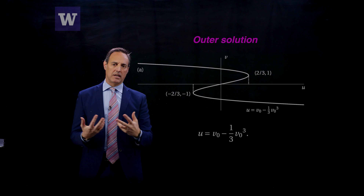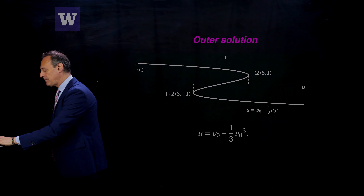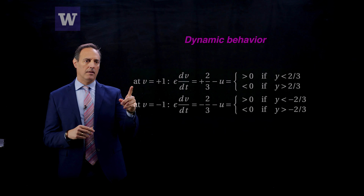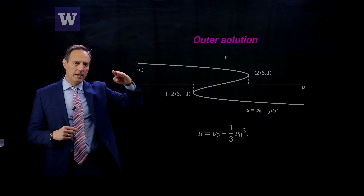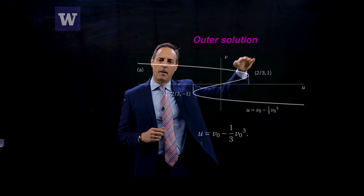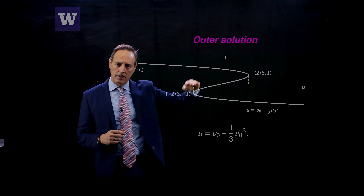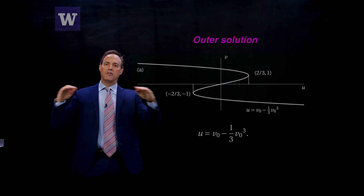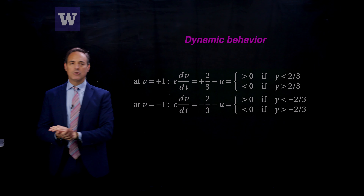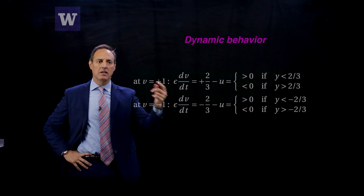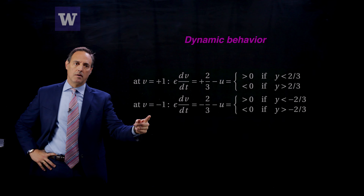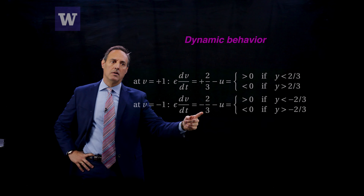Now I want to look at the dynamic behavior relative to this curve, examining the lines v = 1 and v = −1 — horizontal lines cutting across the phase plane. I want to know what the flow field is doing along those lines. At v = 1, plugging into the dv/dt equation gives: epsilon dv/dt = 2/3 − u. At v = −1, epsilon dv/dt = −2/3 − u.